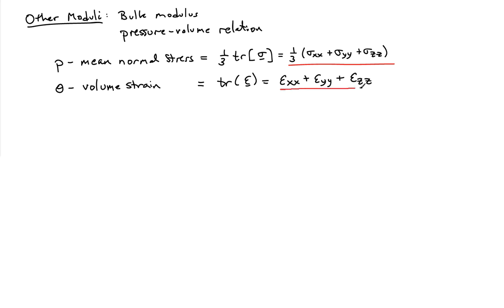And the volume strain is the trace of the strain tensor. So it's the sum of the three normal strains taken together gives you what's known as the volumetric strain. And the bulk modulus connects these two quantities together.